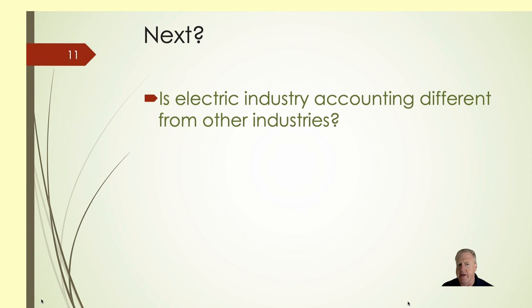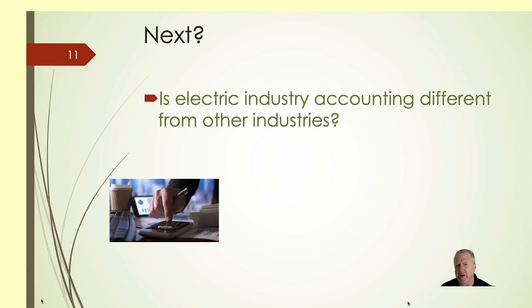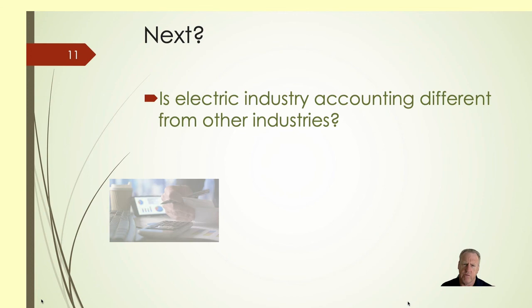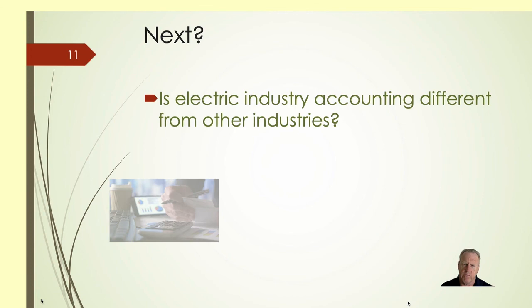Our next topic is: is electric industry accounting different from other industries, or is it really that specialized? Well, we have debits, we have credits, we have financial statements — we have the cost of goods sold, manufacturing electricity. We'll find out. Check it out — we'll see you back in a minute.